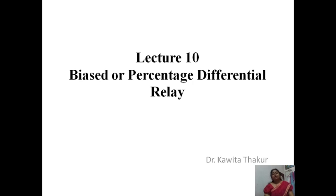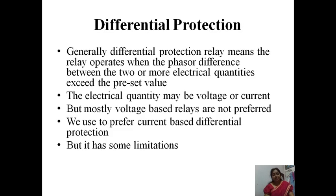In the last lecture, you studied differential protection. Generally, a differential protection relay operates when the phasor difference between two or more electrical quantities exceeds a preset value. The electrical quantity may be voltage or current, giving us two principles: circulating current principle or voltage balance principle. But mostly voltage-based relays are not preferred; we prefer current-based differential protection, i.e., the circulating current principle.